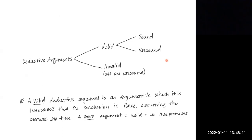With deductive arguments, we want to use the terms valid and invalid. These are terms that are specific to deductive arguments. We're also going to use the terms sound and unsound.